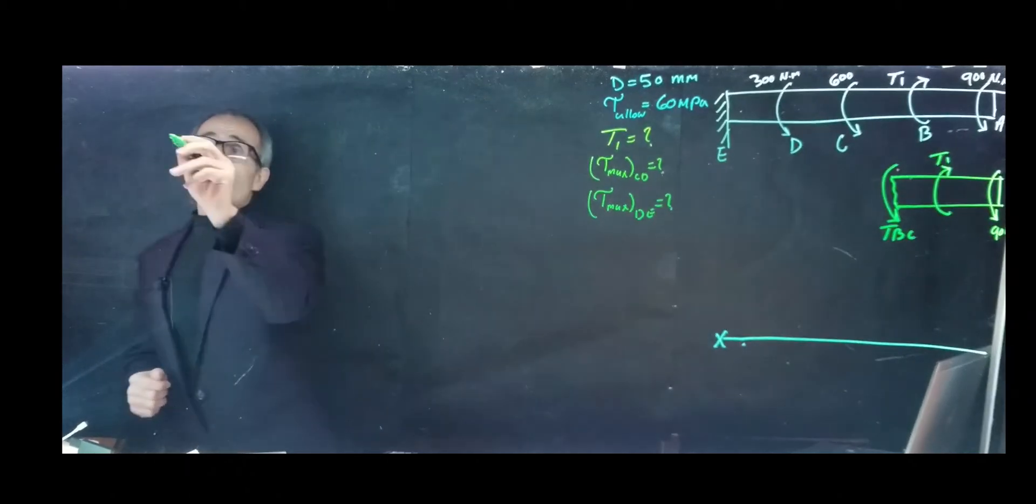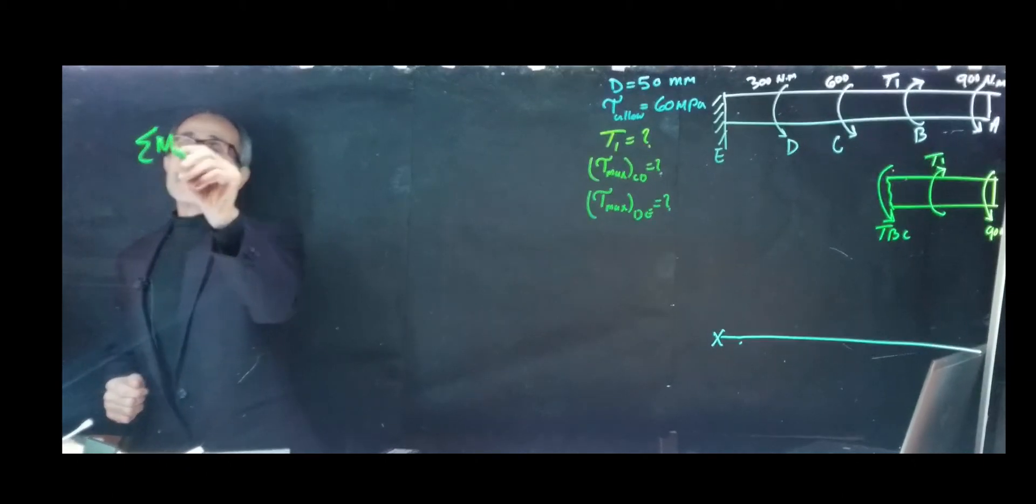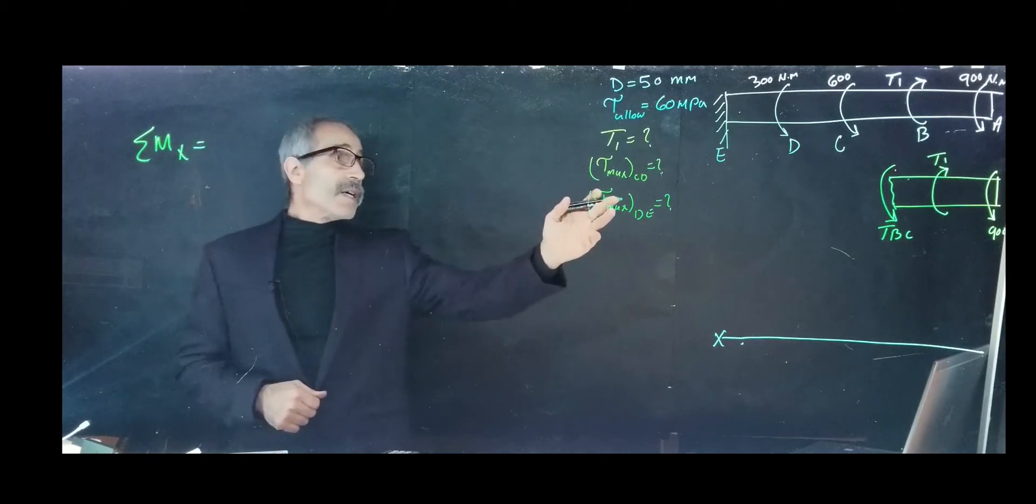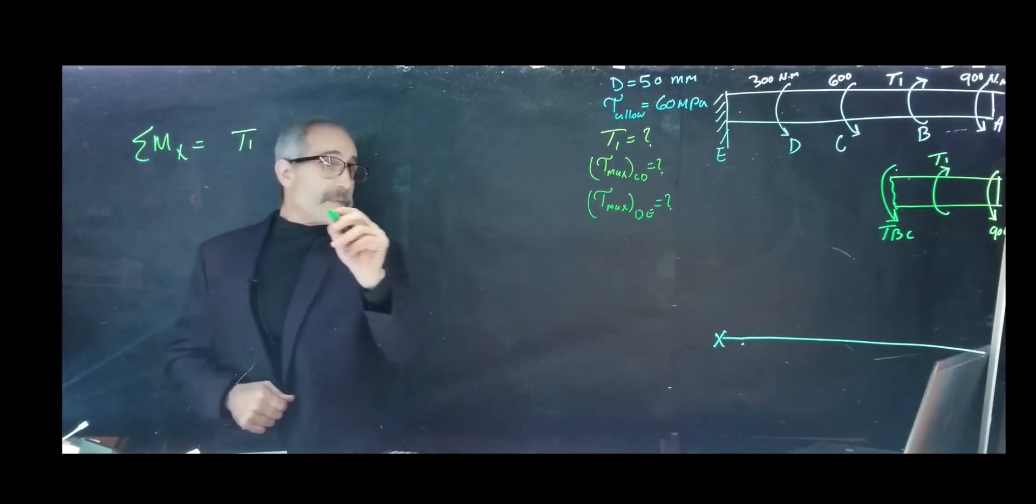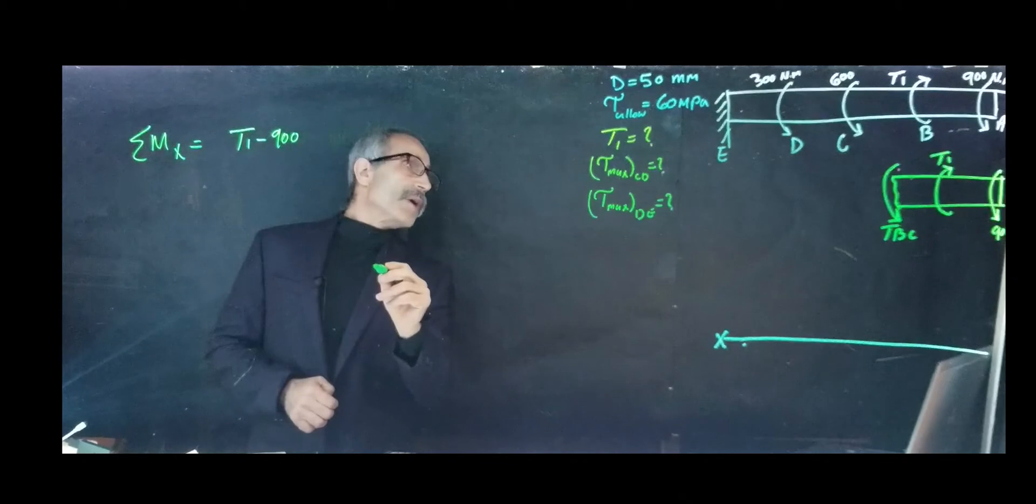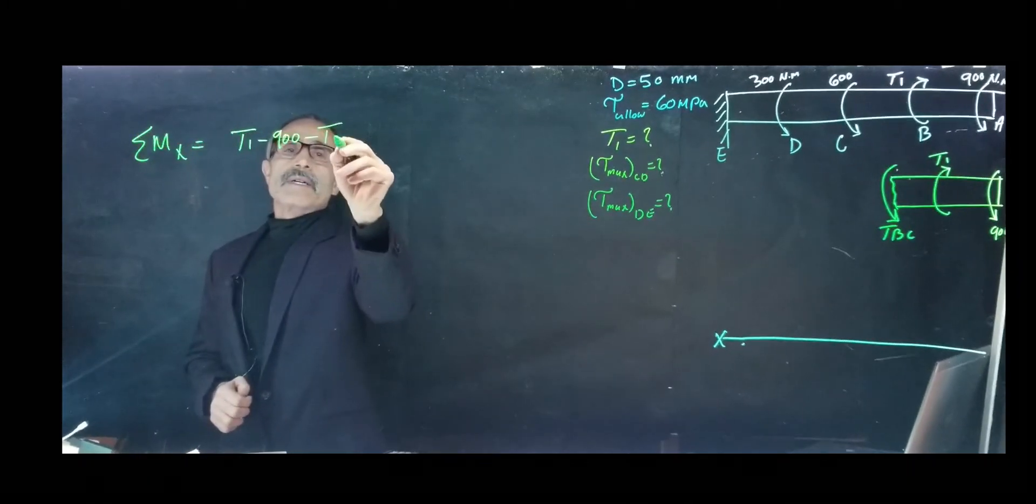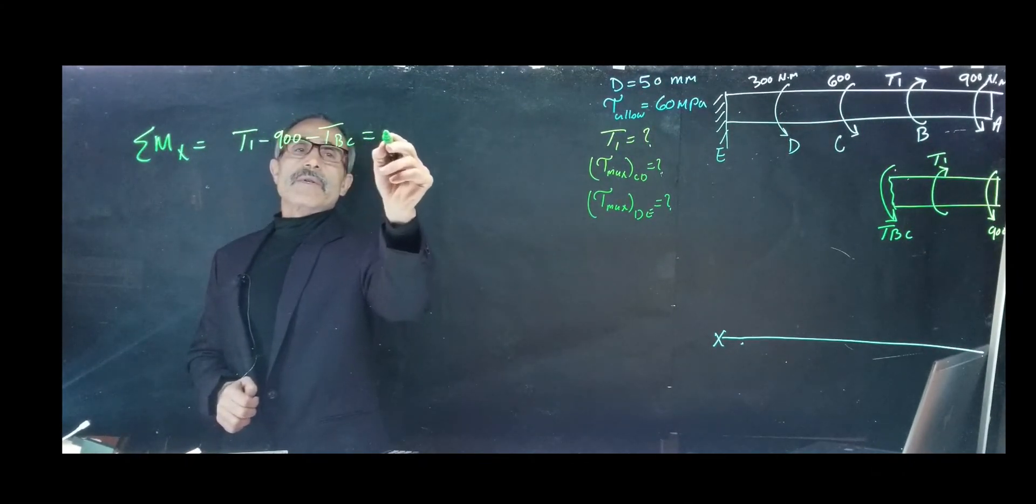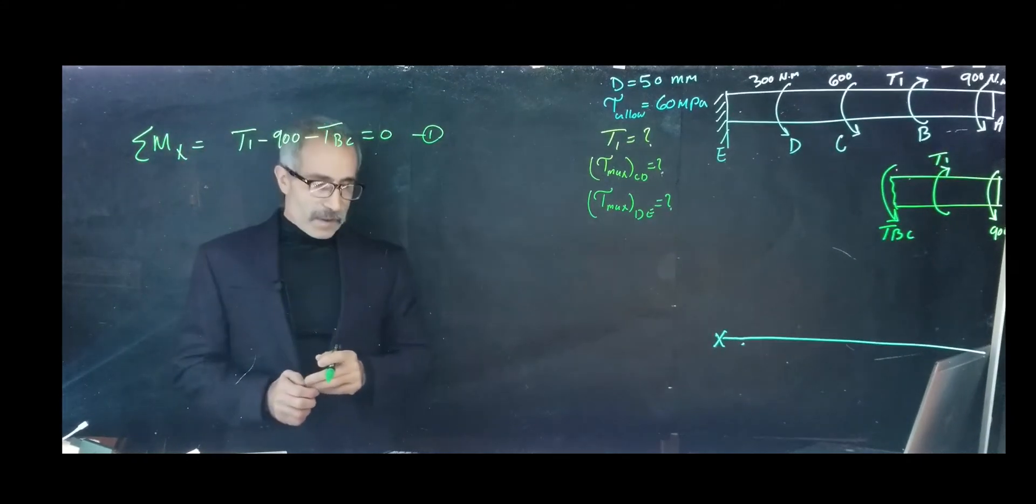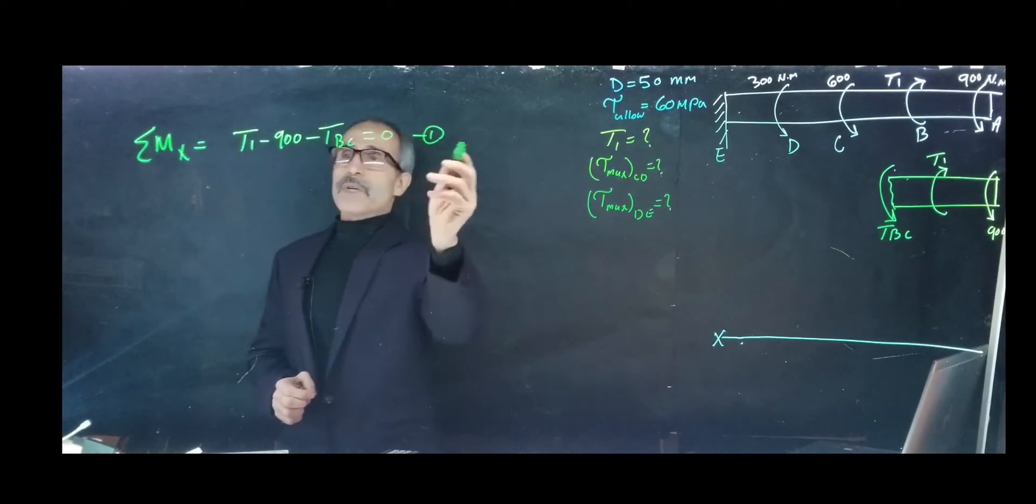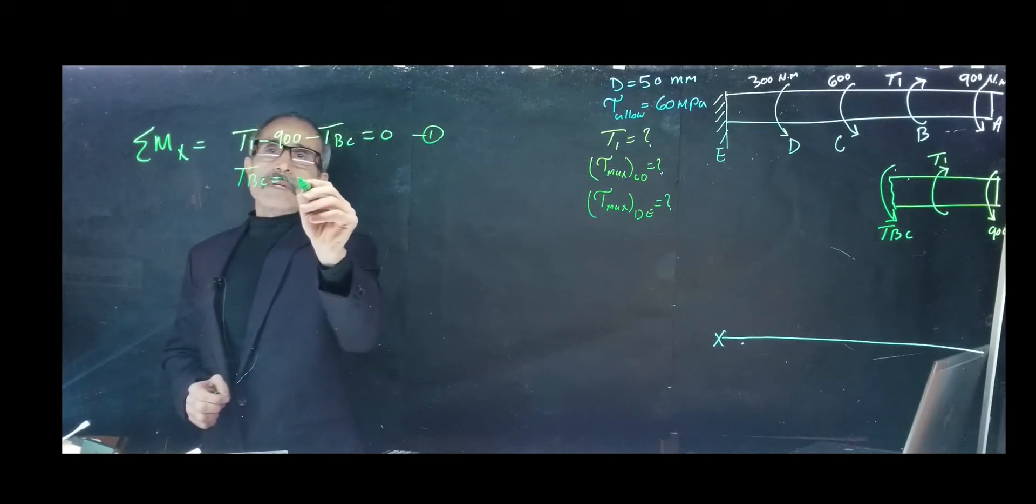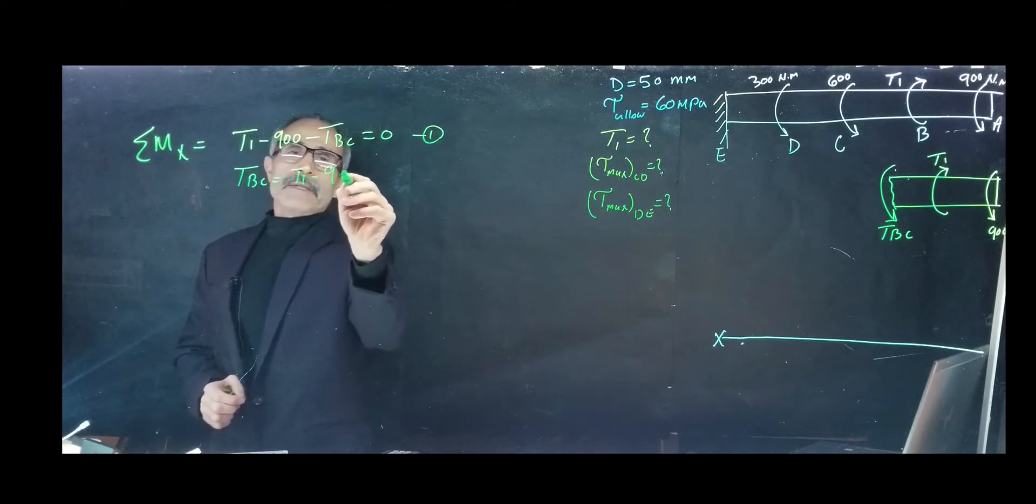It will be a summation of moments in X equals zero. We have T1 minus 900 minus TBC equals zero. That gives us one equation. We can further modify this equation which becomes TBC equals T1 minus 900.